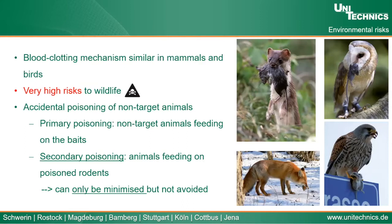What kind of environmental risks come with the use of anticoagulants? Since the blood clotting mechanism is similar in mammals and birds, there is a really high risk to wildlife — especially owls, buzzards, foxes, and other animals that feed on rodents. There are two kinds of poisoning of non-target animals: primary, where non-target animals feed directly on the baits, and secondary, where they feed on poisoned rodents. Secondary poisoning has strong adverse effects and cannot be avoided, only minimized.